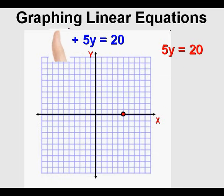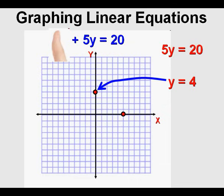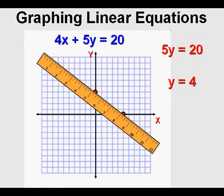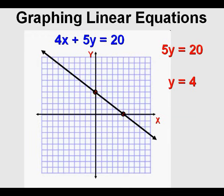Now we find the y-intercept by covering up the x-term, setting x equal to 0. That gives us 5y equals 20. We solve for the y-intercept by dividing both sides by 5, so our y-intercept is 20 divided by 5, which equals 4. We graph the point along the y-axis at y equals 4. Now we're ready to graph the equation by lining up a ruler and drawing a reasonably straight line through the two points.